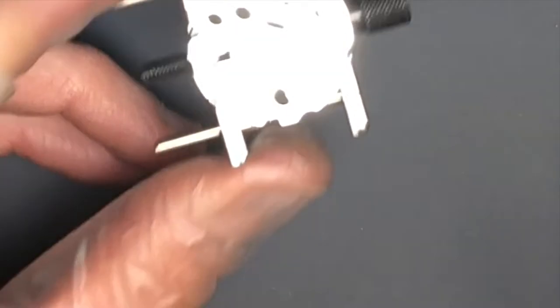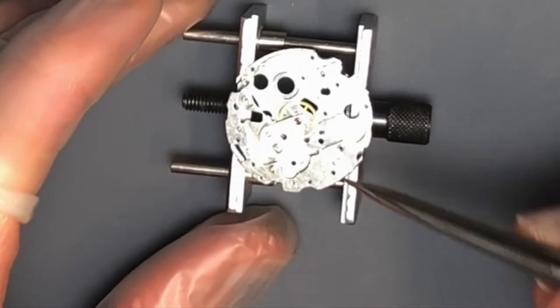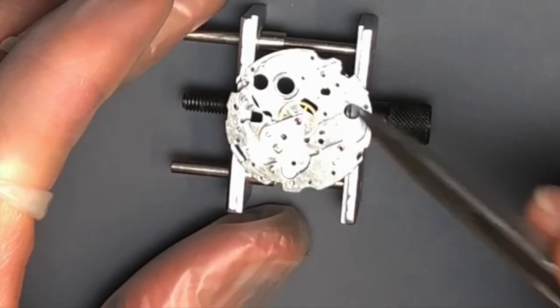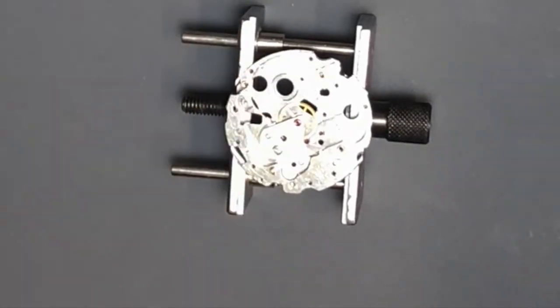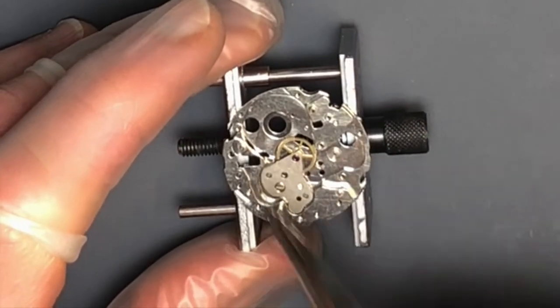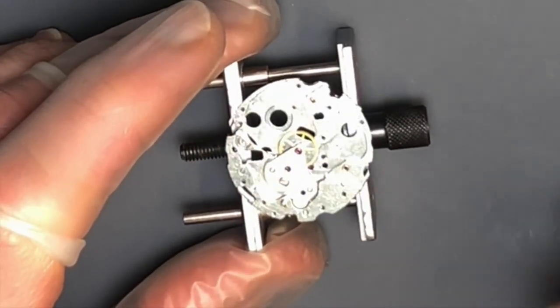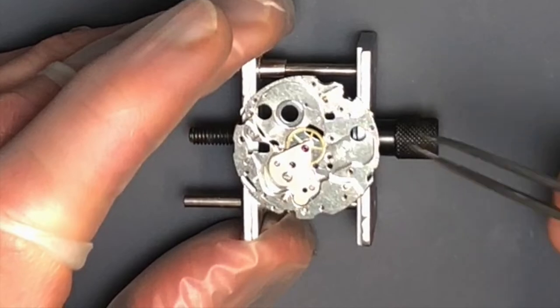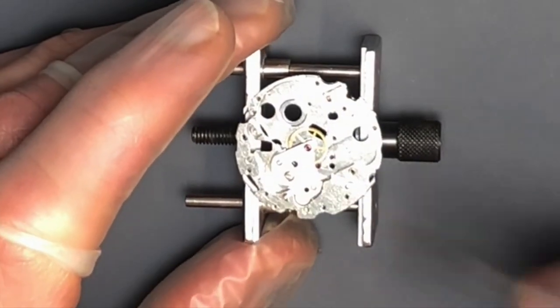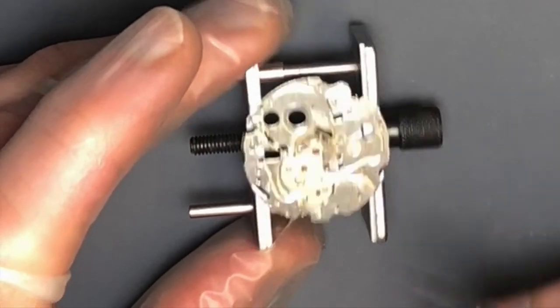We're just going to go ahead and start getting this back together. When we get to the hour wheel and cannon pinion, I cleaned them to the best of my ability, wire brushed them as well so that we could remove any leftover corrosion that might cause them not to be able to slip against each other. I think they're gonna be just fine with the originals and we'll see how it goes when we get to that point. With the center wheel in place and the bridge secure, I like to then flip the watch over and do the calendar side first.